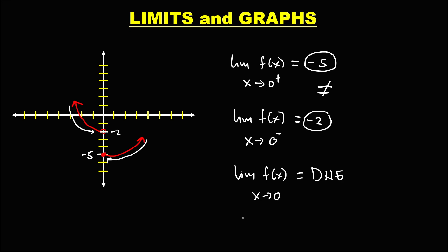To find the value of f(0): since this is the shaded circle, therefore f(0) is equal to negative 5.